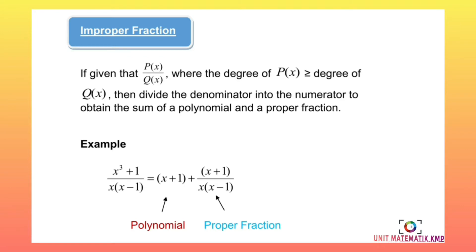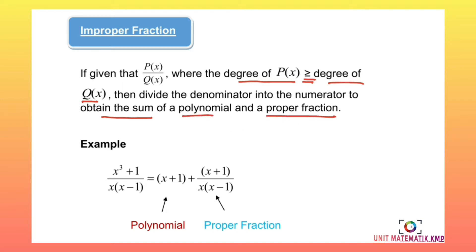Next we move to the last part, which is improper fraction. If given P(x) over Q(x) where the degree of P(x) is more than the degree of Q(x), then we need to divide the denominator into the numerator to obtain the sum of a polynomial and a proper fraction. If we are given an improper fraction, all we need to do is perform long division.